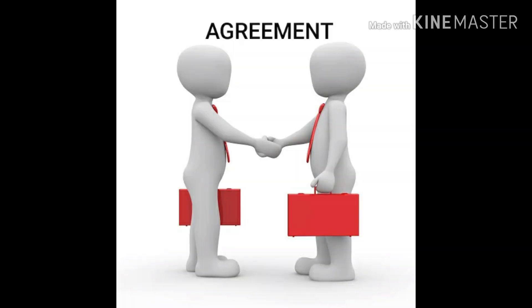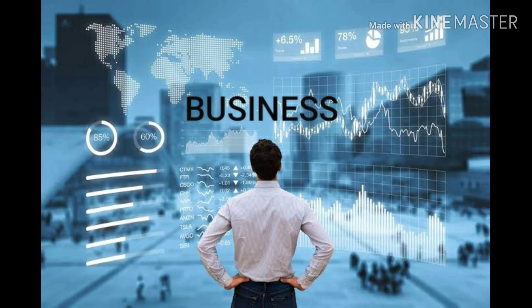The essential features of partnership are as follows. Agreement: Partnership is an agreement between two or more people who decide to do business and share its profit and loss. To have a legal relationship between partners, the partnership agreement becomes the basis. The agreement can be in written or oral form. An oral agreement is equally valid, but partners should have a written agreement to avoid disputes in the future. Business: To carry on some business, there should be an agreement. Merely joint ownership of property does not amount to partnership. The business must also be legal in nature; a partnership to carry out illegal business is not valid.